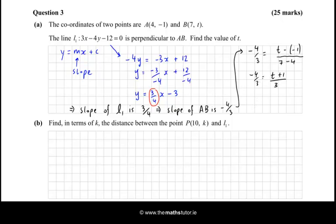We can multiply across by 3, both sides by 3, so it gets rid of the 3's in the bottom. And then we have -4 = t + 1, therefore -4 - 1 is -5 = t. There's our answer.